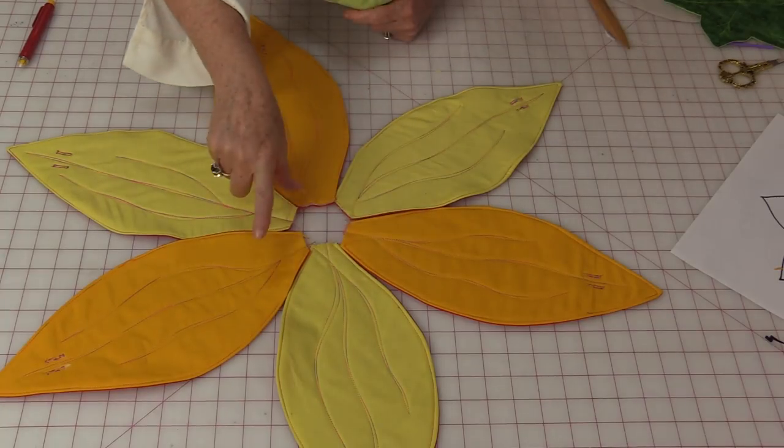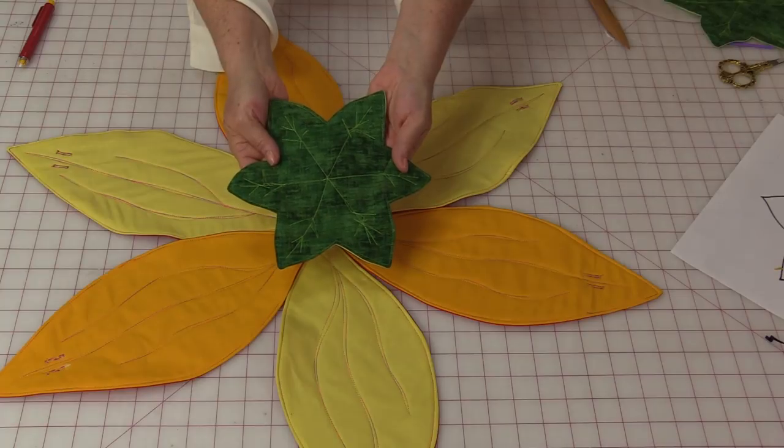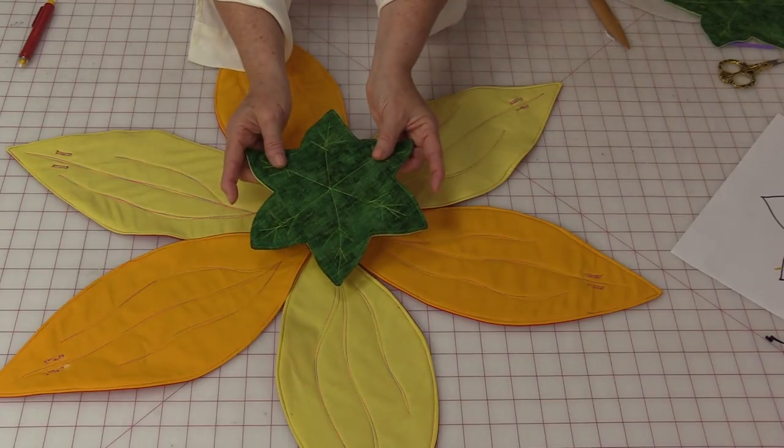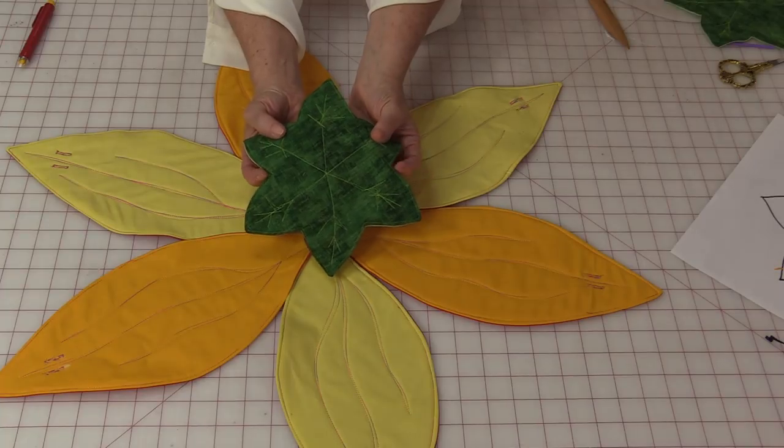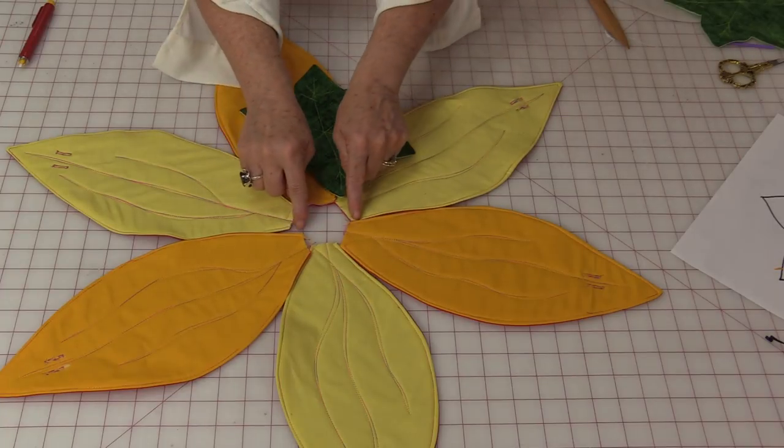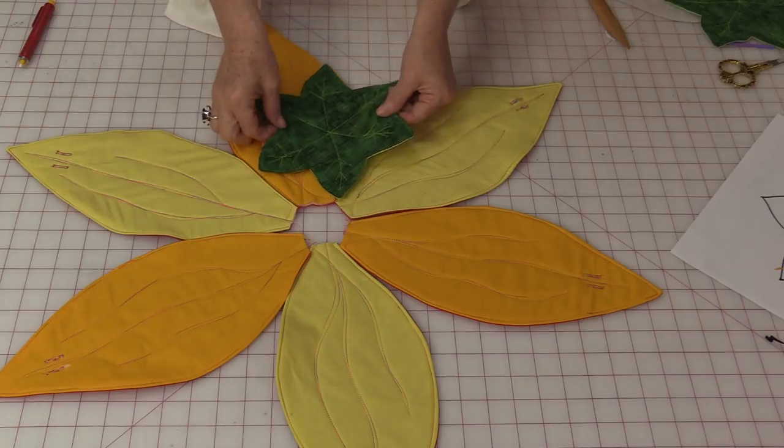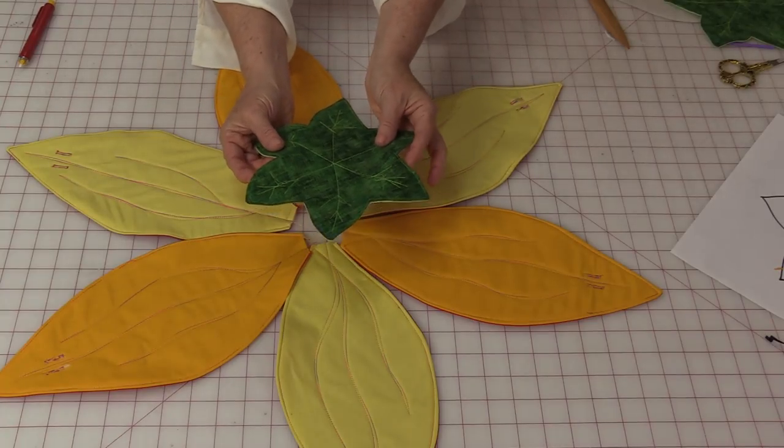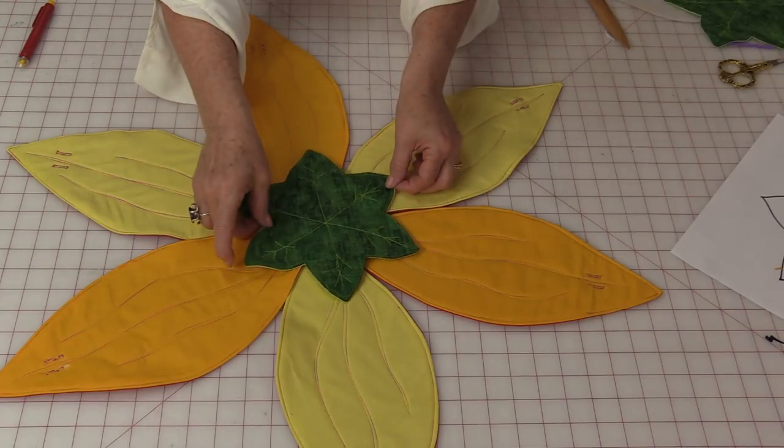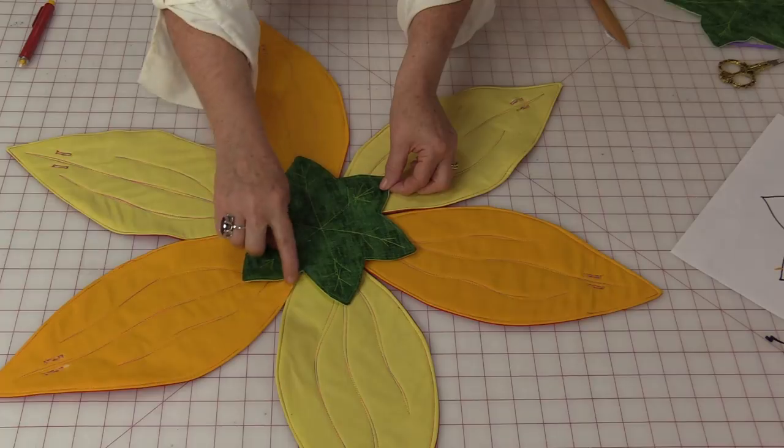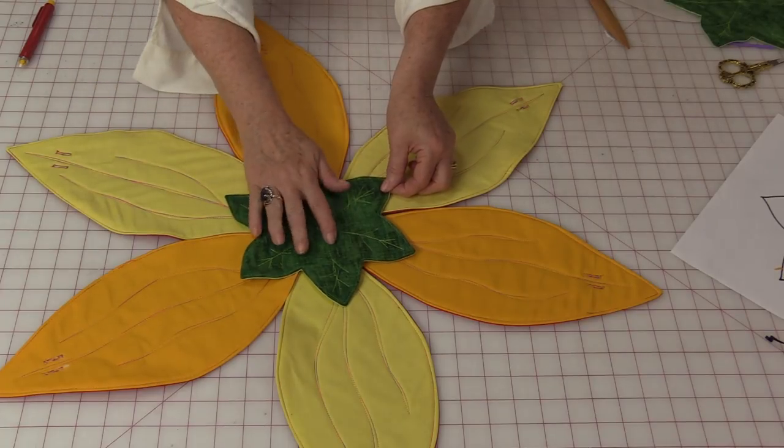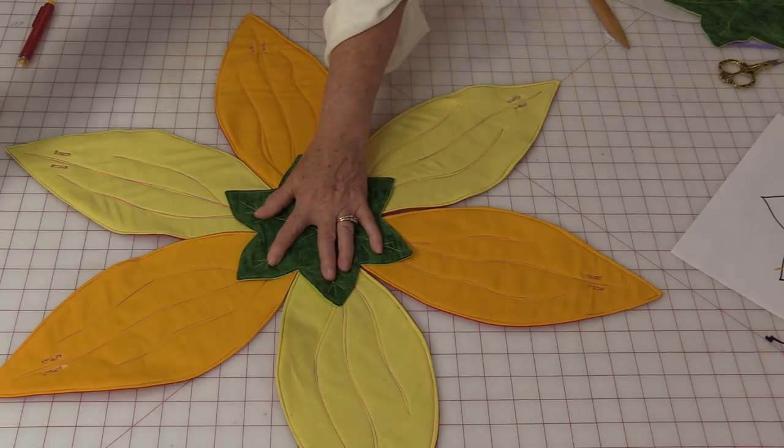And once I have this shape done, I'm going to attach my little leaves on. The only thing that I really need to watch for is I want one of these areas that it comes in to be in one of the areas that come in because this is going to be where the handle is and the spout. So it doesn't matter which area you put them in. They just need to line up on one of those openings. And I'm going to pin those on.